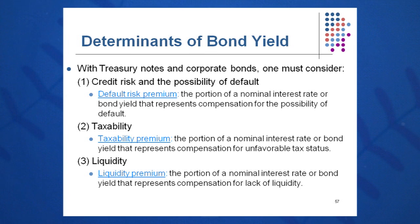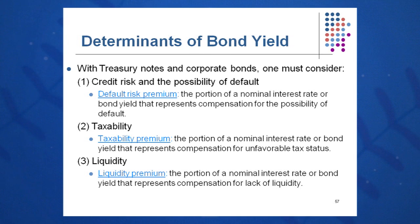We also want a taxability premium, since corporate bonds are taxable. We want a little bit extra in the return to compensate for that taxability requirement. Additionally, we want a liquidity premium, because bonds are not always liquid or traded every day for a particular corporation — so we want a little extra pay for that impact.